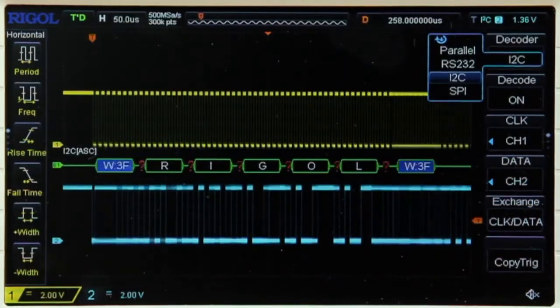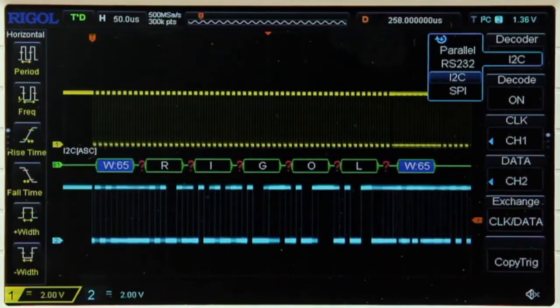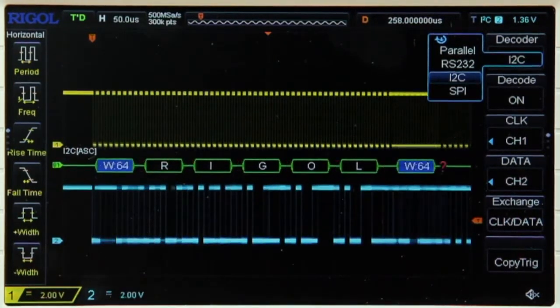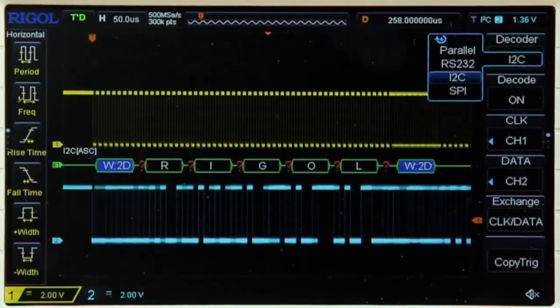The DS1202Z-E performs serial decode on RS232, I2C, and SPI signals right out of the box, allowing users to quickly and easily decode serial data.